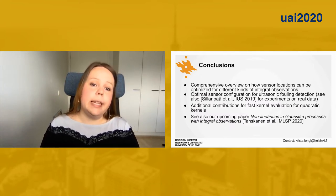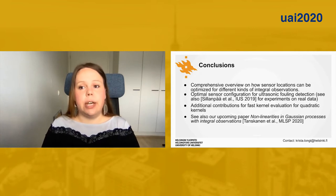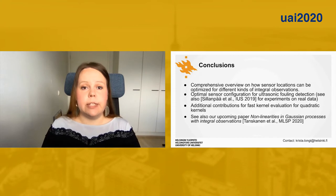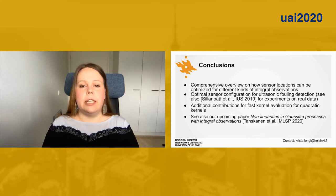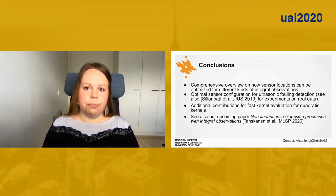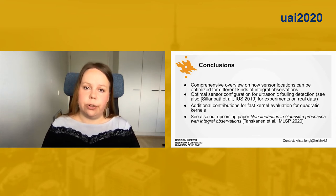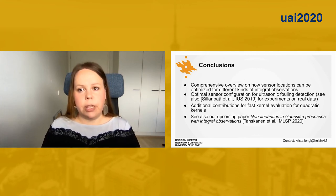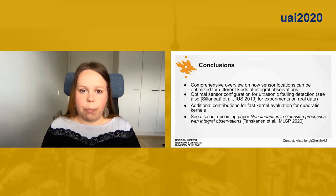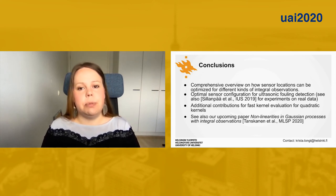In conclusion, in this paper we provide the first comprehensive overview on how sensor locations can be optimized for different kinds of integral observations. We also show optimal sensor configurations for ultrasonic fouling detection. For more experiments on real data and more details about the actual physics of the application, you can see our paper published in the International Ultrasonic Symposium last year. In addition, this paper includes contributions for fast kernel evaluation with integral observations for quadratic kernels. If you are interested in integral observations in general, you can also see our upcoming paper in the Machine Learning for Signal Processing Conference about non-conjugate inference with integral observations. For any questions, comments, or suggestions, feel free to contact me at the email shown here.